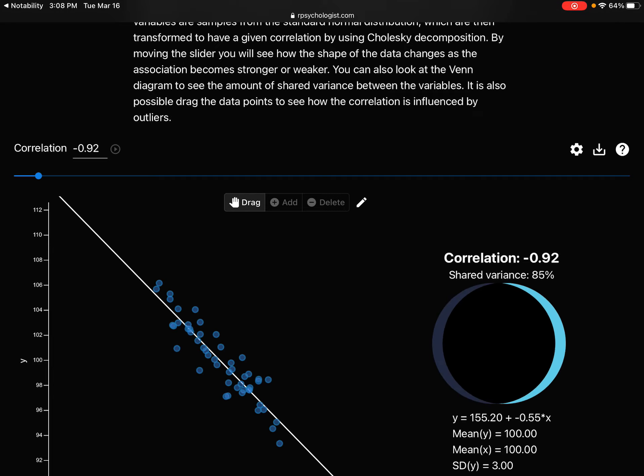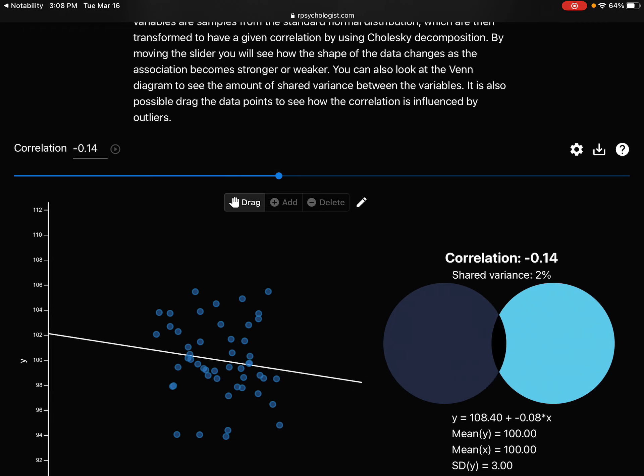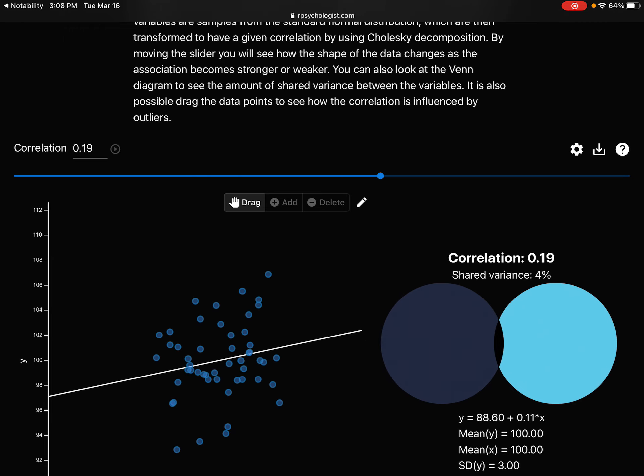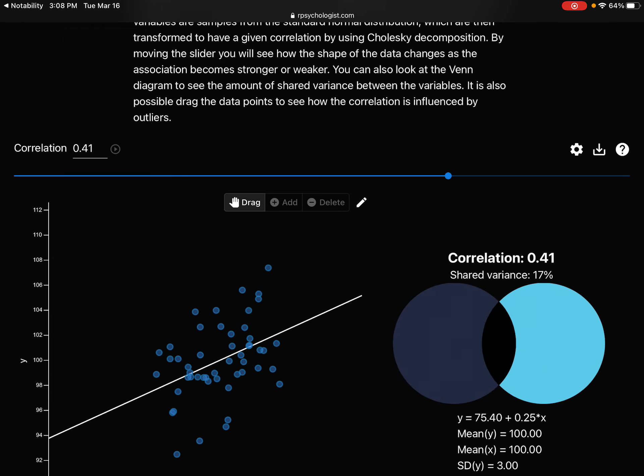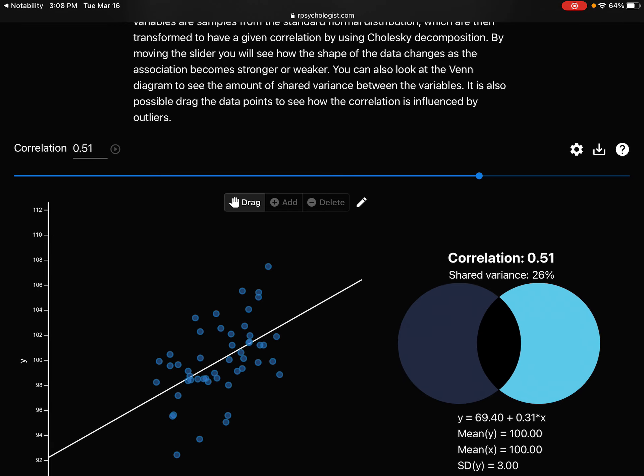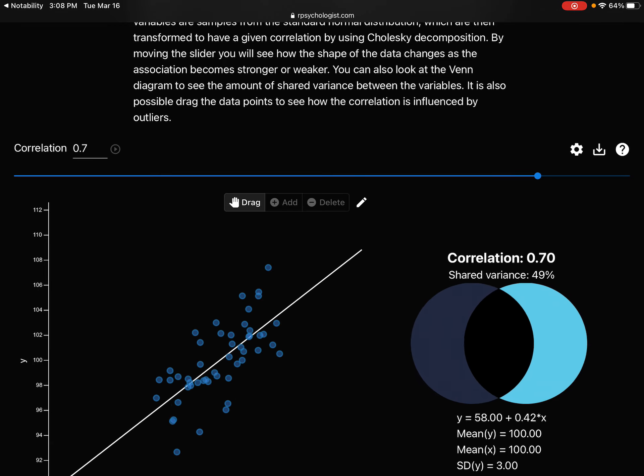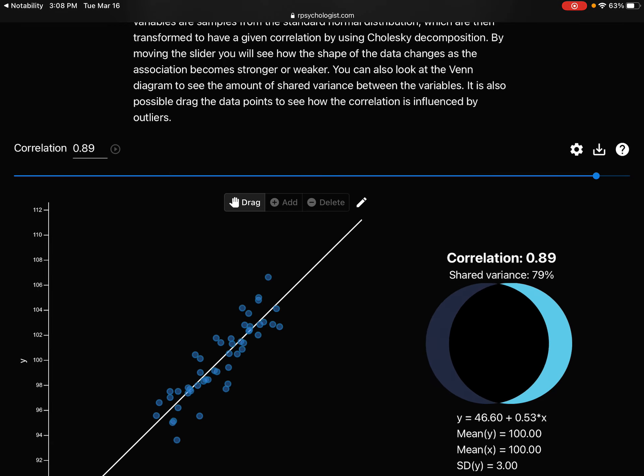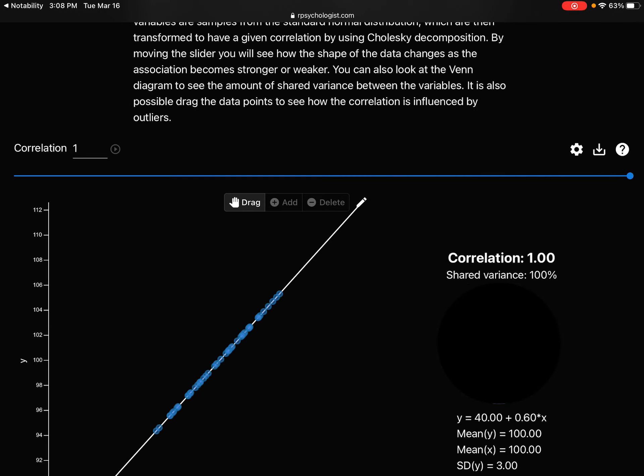As you slide over to the right, notice that the points become scattered again, and then they start to come together into a pattern. That correlation moves to the positive side. When they're perfectly lined up and the line is sloping in the positive direction, that correlation becomes positive 1.